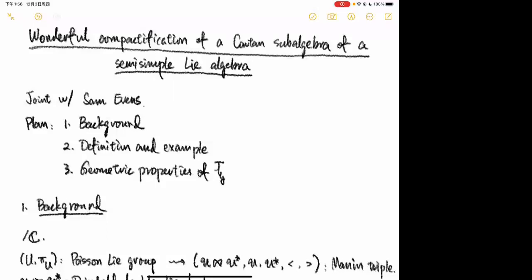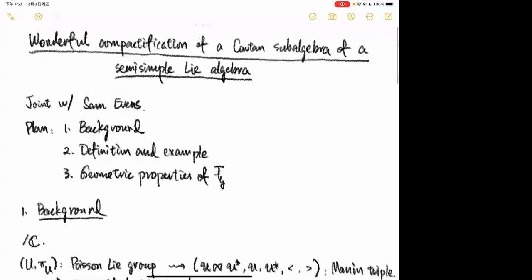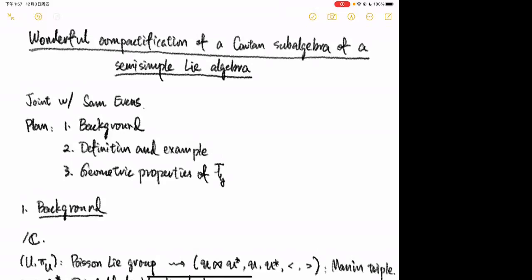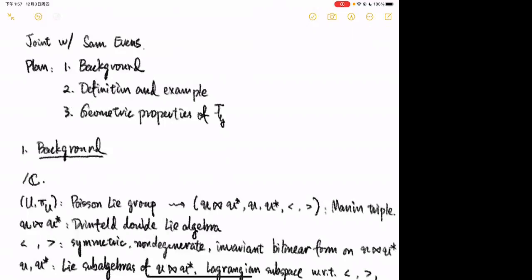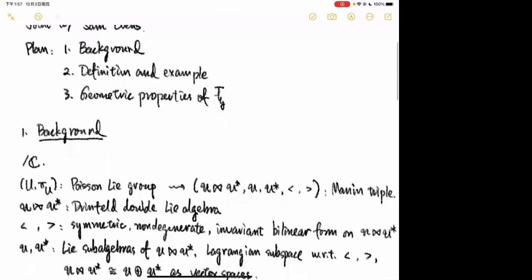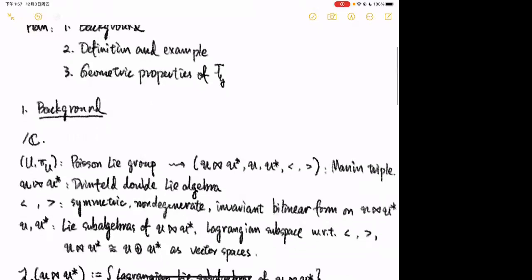Thank you for the invitation and the introduction. It's my great honor to have this opportunity to speak here. I'm going to introduce to you the wonderful compactification of a Cartan subalgebra of the semi-simple Lie algebra, and part of this is joint work with Sam Evans. The plan for today is: I'll start with some background knowledge, then give relevant definitions and examples, and in part three discuss geometric properties of the wonderful compactification.